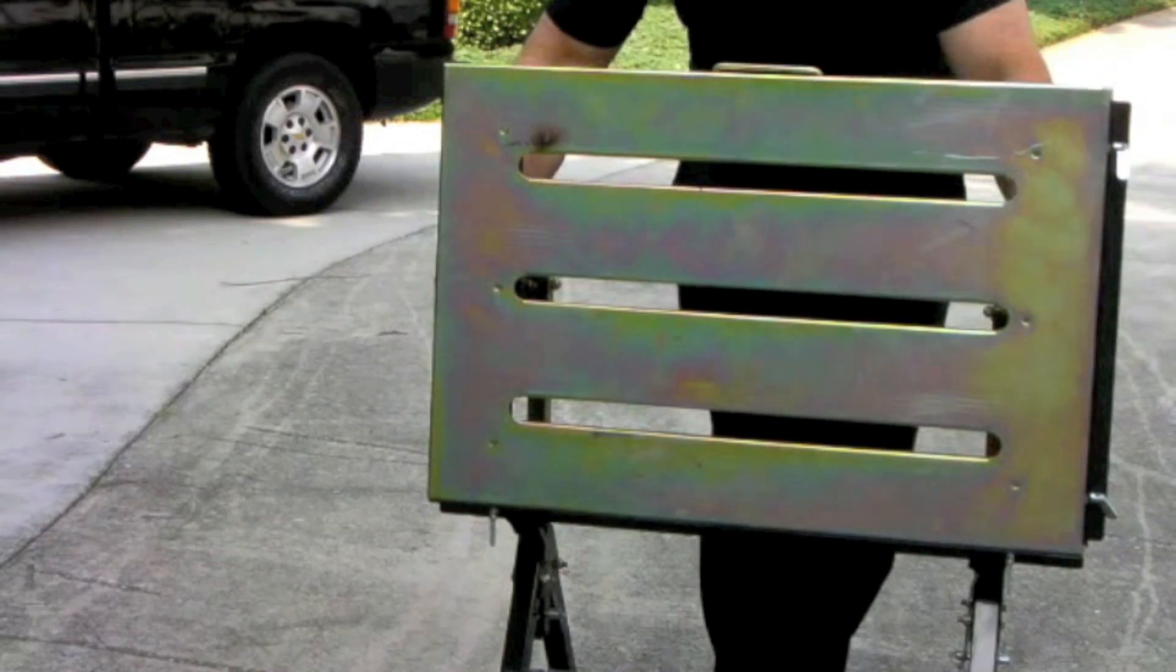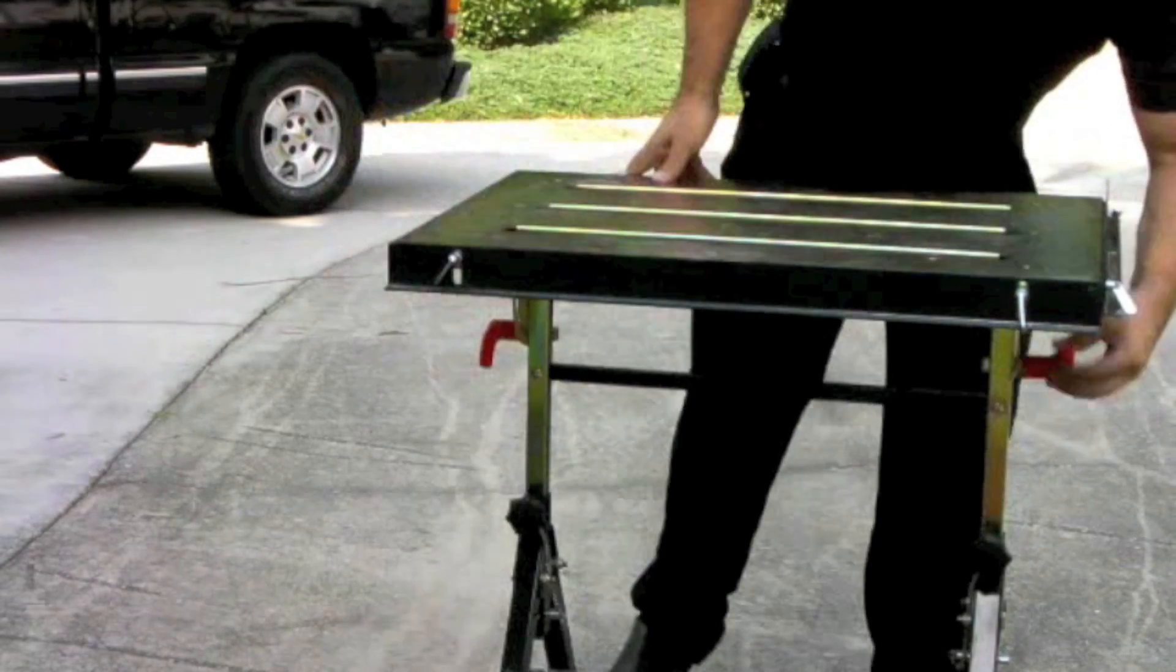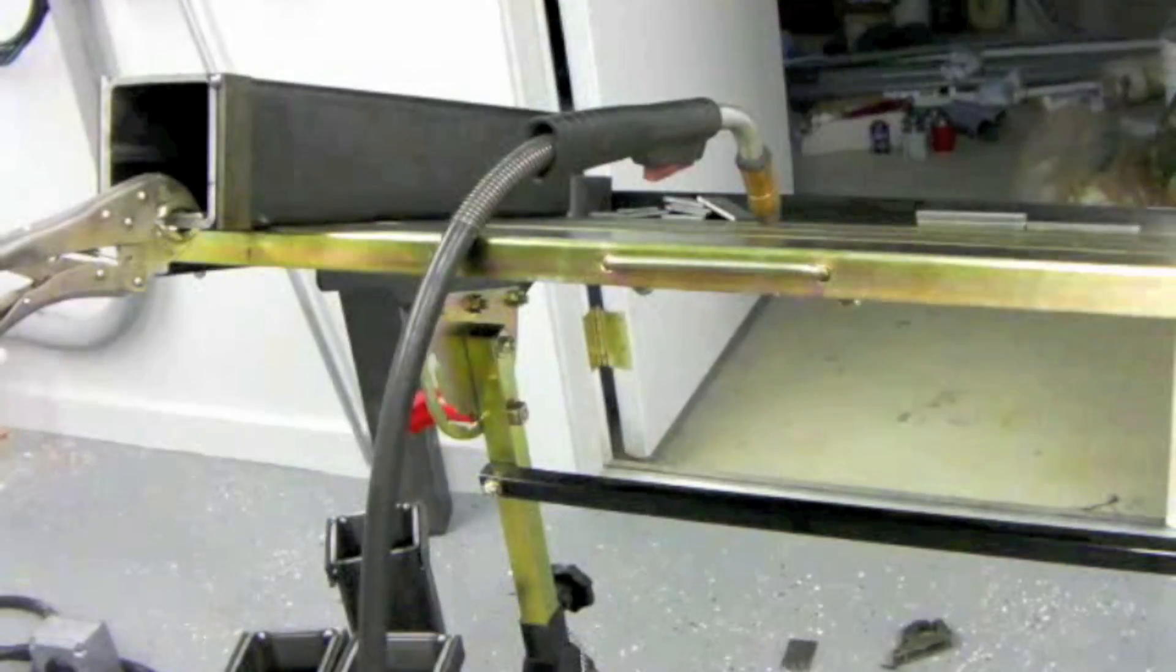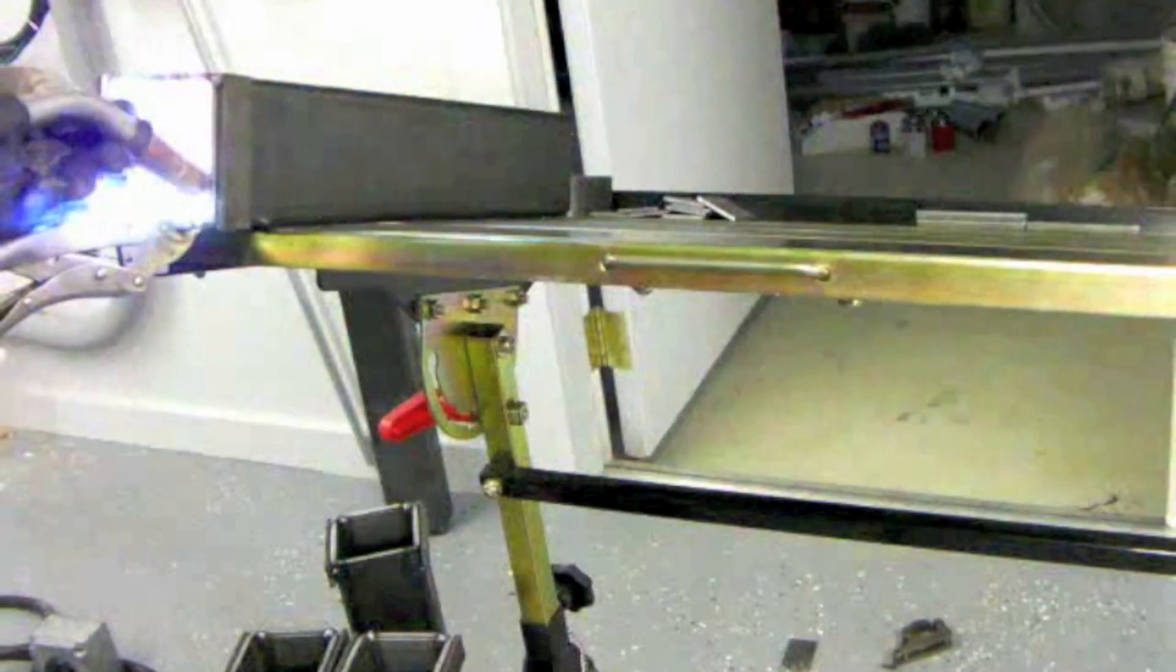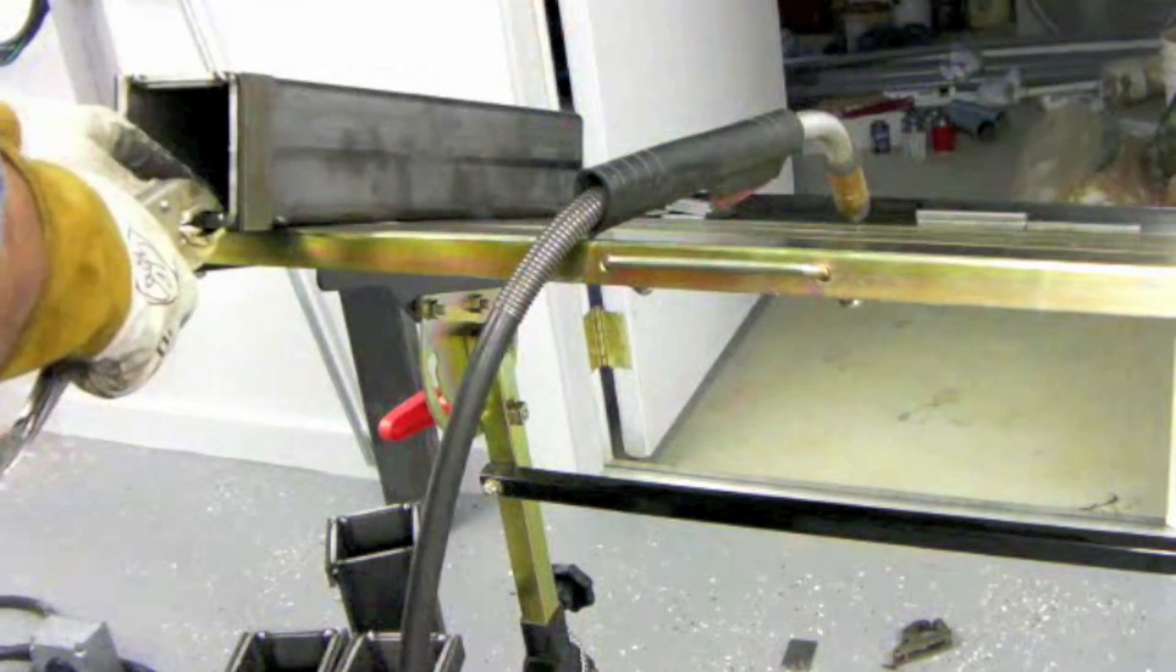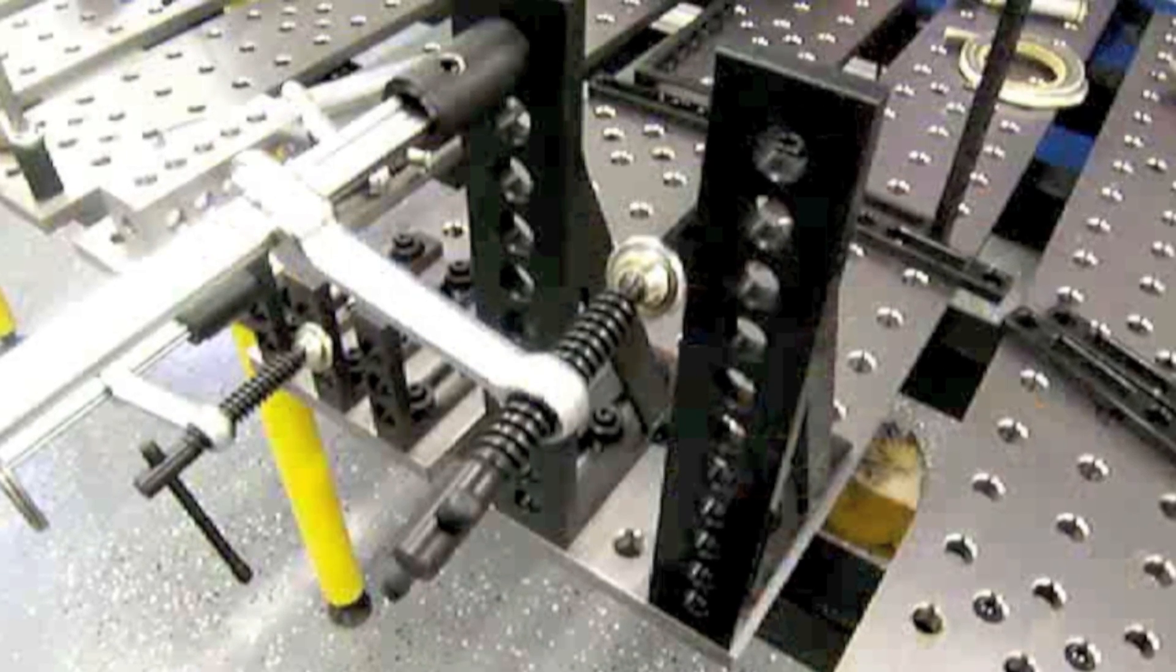A while back I had a big project going on, about 15 or 20 parts, and I used a Stronghand tool portable welding table to help me build them. We talked about some of the features like this fence to help line parts up, and also the fact that it tilts and adjusts in height. On that particular job, welding inside the square tube, I had to get it at an angle and up in a place where I could see it and be comfortable, so that was a really handy feature.